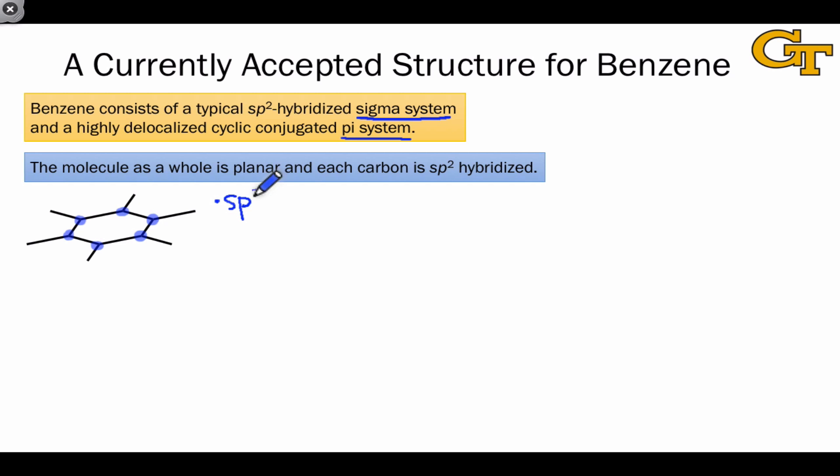All six carbons that I've highlighted in blue have sp2 hybridization, and they're all trigonal planar, and this makes the molecule planar as a whole.